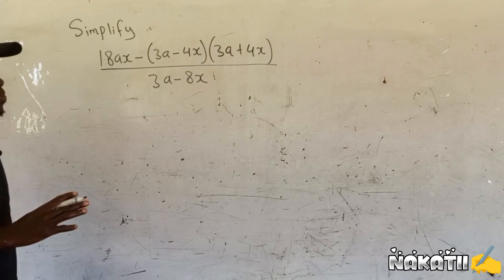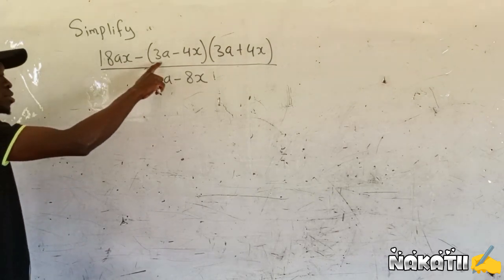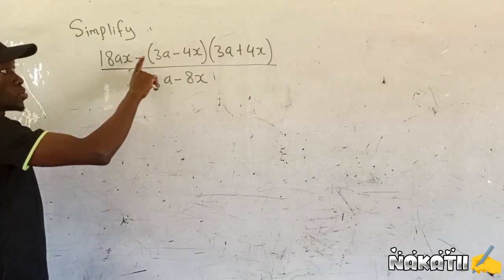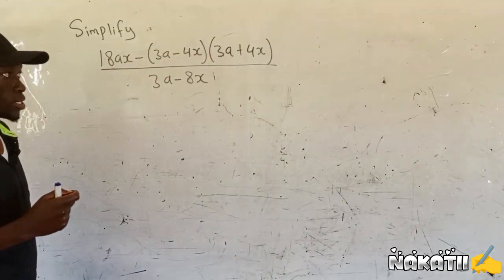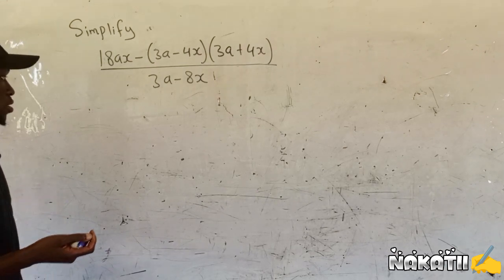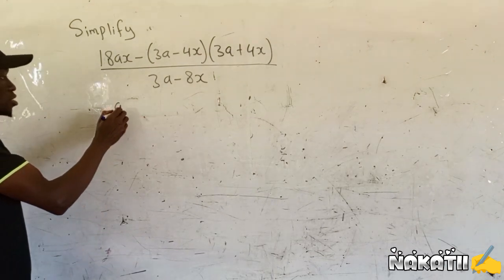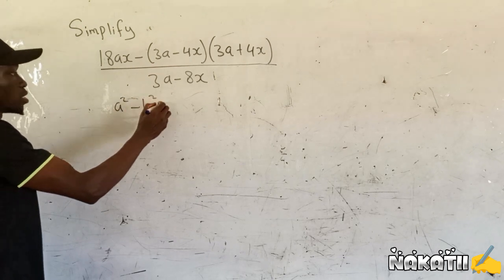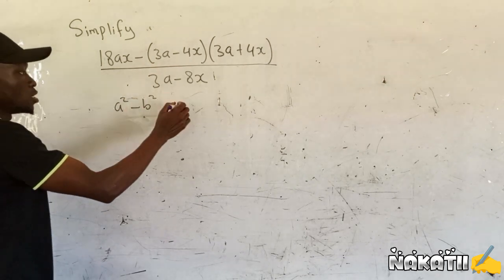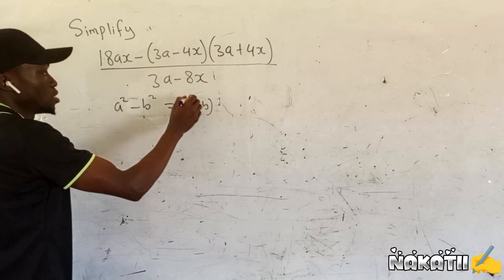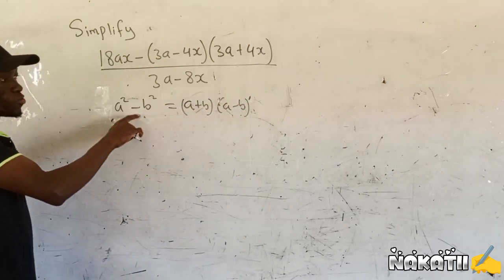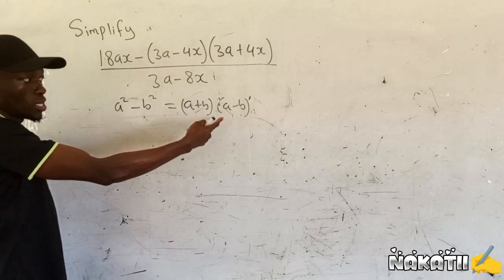What is important here is to note this one here — it's very important. This one here is a difference of two squares. How do you expand a difference of two squares? If you have a squared minus b squared and you're told to factorize this, it is simply a plus b and a minus b. This is how you factorize a difference of two squares.